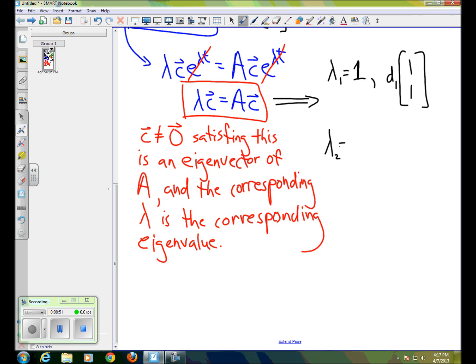Our second eigenvalue is negative 3. And the corresponding eigenvector for that is 2, 1. So any scalar multiple d2 of that would also be an eigenvector.